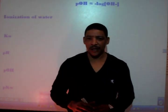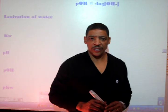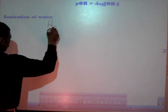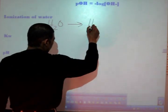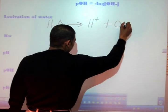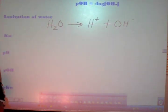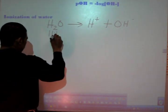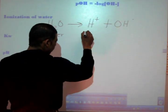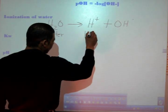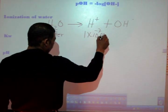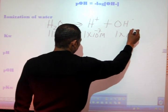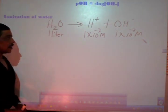Now let's learn about a concept known as pOH. As we know, water will ionize to produce hydrogen ion and hydroxide ion. From one liter of water, we will produce a concentration of 1×10⁻⁷ molar hydrogen ion and 1×10⁻⁷ molar hydroxide ions.